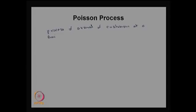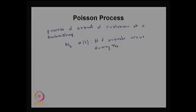This is the same example we have discussed in the beginning of this course. Over time, how many arrivals are going to take place? That is going to be a random variable. So let N(t) denote the number of arrivals occurring during the interval [0, t].